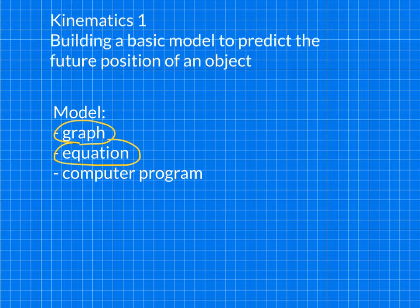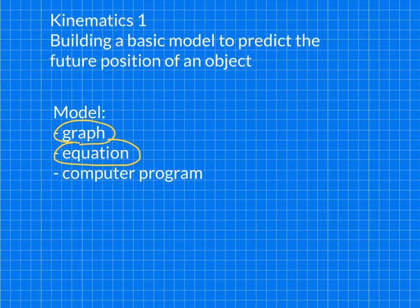The first thing we need to do is plan out what we want to be our input and what we want it to predict, also known as the output. Then we have to figure out all the things that might affect the output so that we can build our model. So let's go ahead and do that.